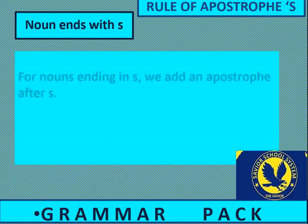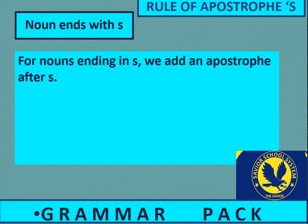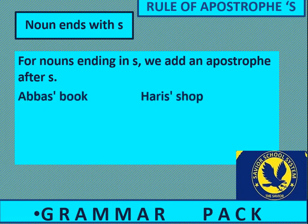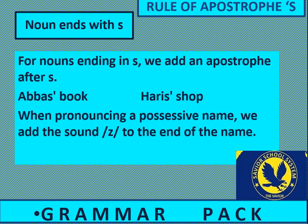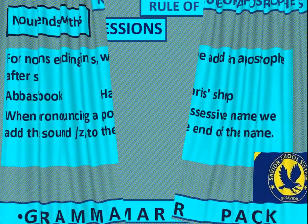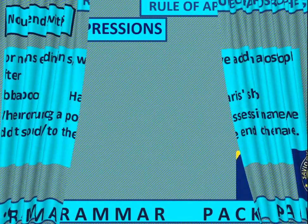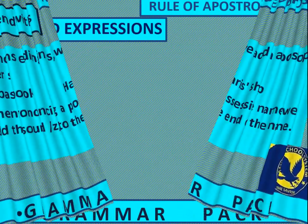For nouns ending in s, we add an apostrophe after s. For example: Abbas's book, Harish's shop. When pronouncing a possessive name ending in s, we add the sound z to the end of the name — like Abbas's book, Harish's shop.